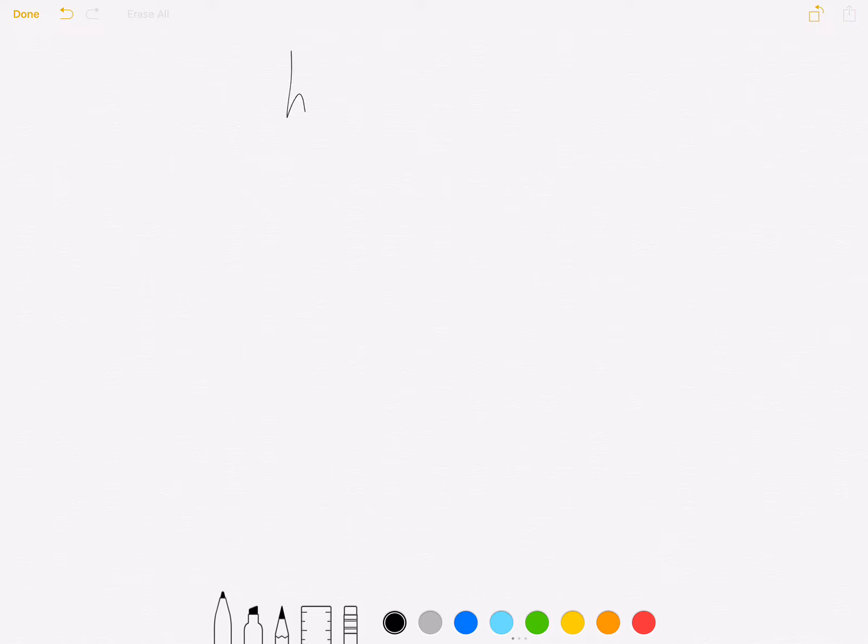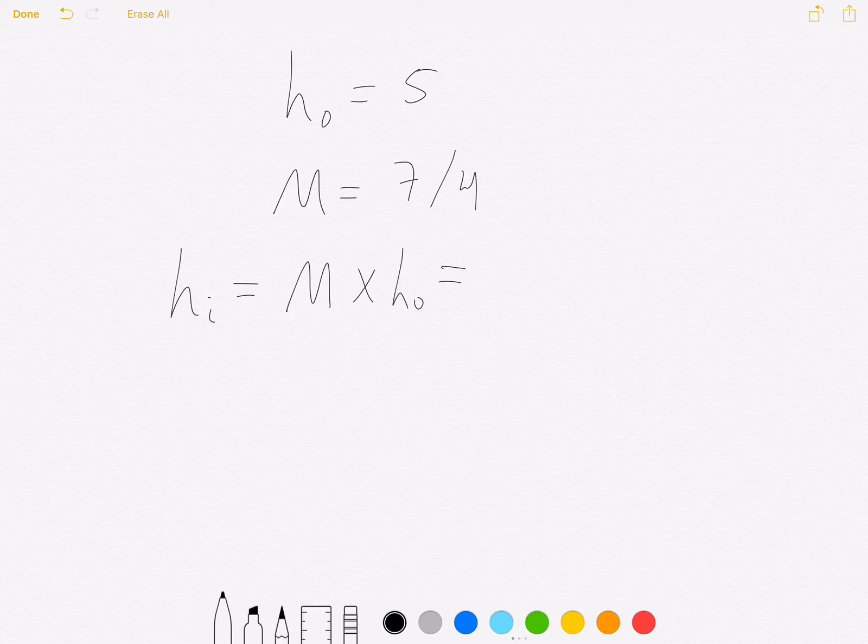So our object height is 5, and we calculated that the magnification is 7 over 4. So we can rearrange the magnification equation to look like this: the image height will be magnification times object height.